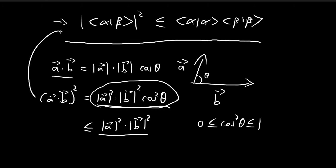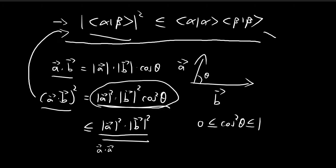If you compare this expression with the Cauchy-Schwarz inequality, you can see that it's basically saying the same thing. Here's the dot product, which is the inner product. On the right-hand side, you have the magnitude squared, which is really just the inner product with itself squared, because in Euclidean vectors the magnitude squared is just the dot product of A with itself. So you can easily verify the Cauchy-Schwarz inequality with this geometrical argument.